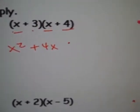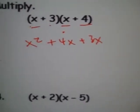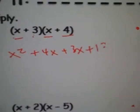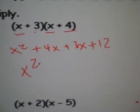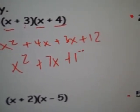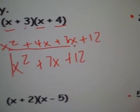And inner, 3 and x. That's positive 3x. And finally last, 3 and 4. 3 times 4 is 12. Now just combine your like terms. 4x and 3x are 7x. And write plus 12 afterwards in your final answer.